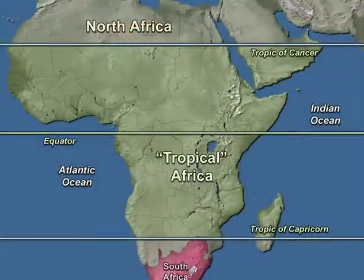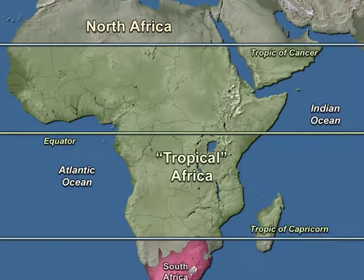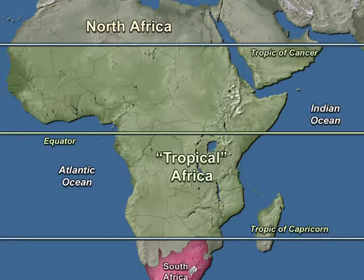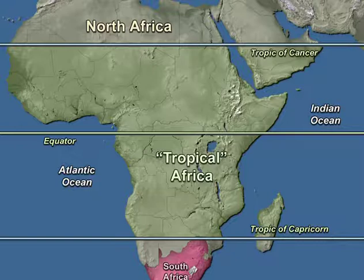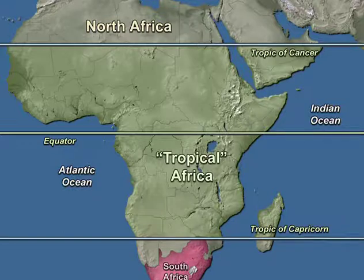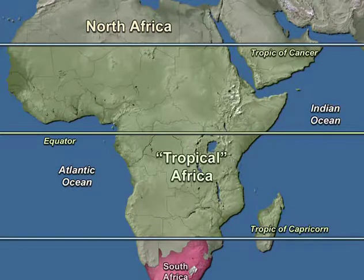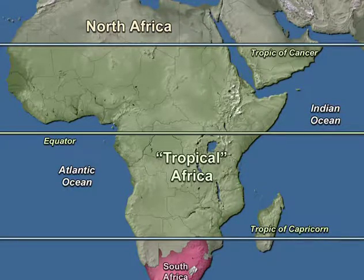A phrase like "tropical Africa" practically rolls off the tongue — this may be wrapped up with the whole jungle thing. But tropical Africa is indeed, technically speaking, mostly tropical. It lies between the Tropic of Cancer in the north and the Tropic of Capricorn in the south. Most, but not all.